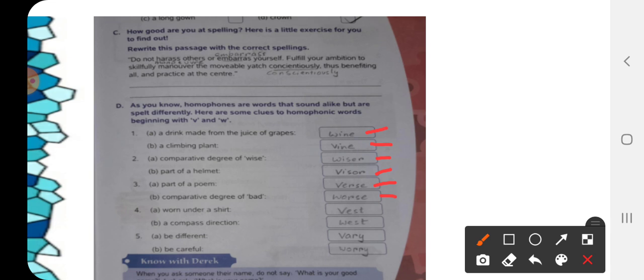Number 4A, worn under a shirt. It is called vest. A compass direction is west, W-E-S-T.